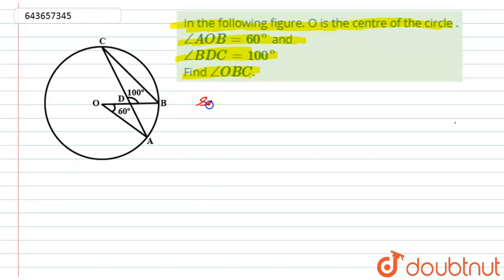Let us start with the solution. In this figure we have a circle with center O. This angle AOB is given to us as 60 degrees, angle BDC is given to us as 100 degrees. So we have to calculate this angle OBC.